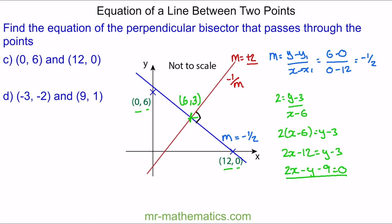Do you want to try and work out the equation of the perpendicular bisector which passes through the points (negative 3, negative 2) and (9, 1)? You can pause the video and resume it when you're ready.